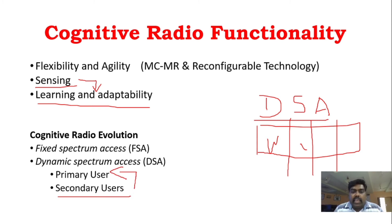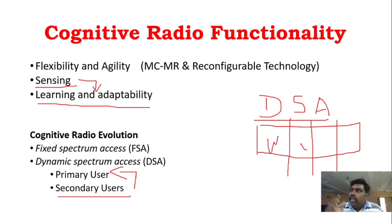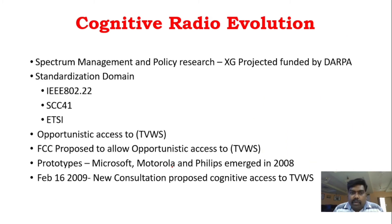The secondary user should not affect the primary user. In dynamic spectrum access, cognitive radio will evolve. What is cognitive radio? Where the spectrum is free — the spectrum holds free — the spectrum is used via cognitive radio. This particular research is very important for the evolution of cognitive radio.